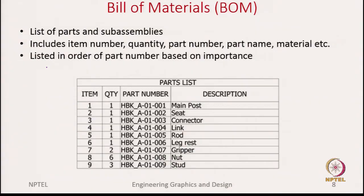Next, let us look at the bill of materials. Whatever parts you have shown with ballooning, you make a list of those parts and show it here. The bill of materials contains the item number and the quantity. For example, the gripper has a quantity of 2; similarly, there are 6 nuts and 3 studs.